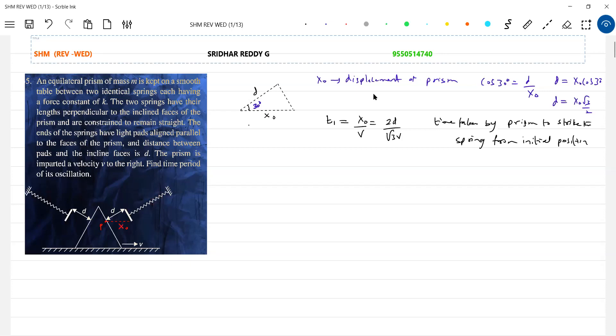How much will the spring be compressed by? Let me take R. What is R? R is the compression of spring when prism moves by a distance X. Getting the idea now? R is the compression.